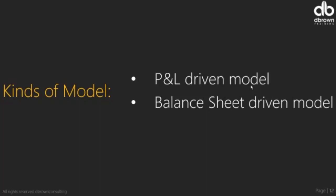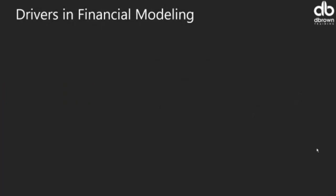Most line items in a bank's P&L — interest income, interest expense, impairments, fee income, fee expense — they all depend on the balance sheet. Which means to build a model for a bank, you build out the balance sheet first. You don't start from the P&L. As a modeler, you need to understand this before you jump into building a model. If you start from the P&L for a bank, you are automatically off.